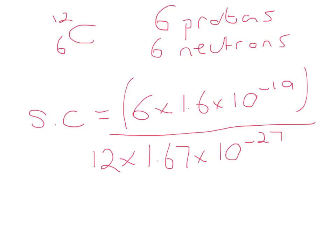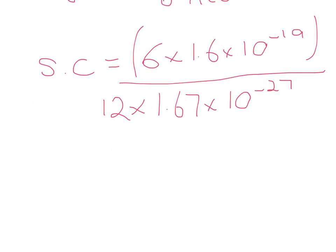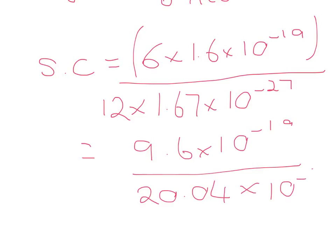So the specific charge of the nucleus is going to be 6 times 1.6 times 10 to the minus 19. That's the total charge of the nucleus. And then the mass, we're going to say is 12 times 1.67 times 10 to the minus 27 kilograms. Now neutrons are slightly more massive than protons, but to three significant figures, the mass is the same. So that's the basic sum that we're doing. So 6 times 1.6 times 10 to the minus 19 is 9.6 times 10 to the minus 19. And 12 times 1.67 times 10 to the minus 27 is 20.04 times 10 to the minus 27.